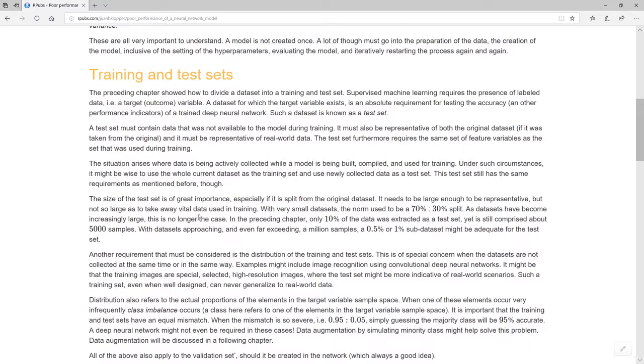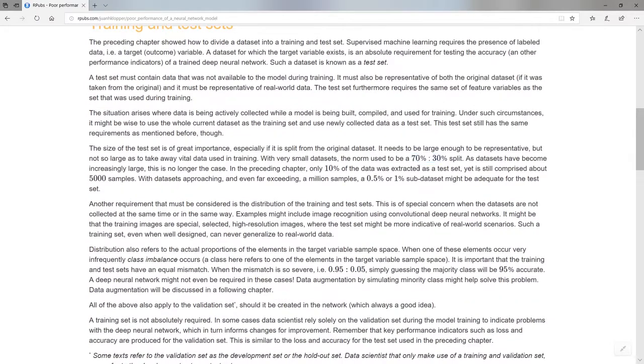Now you don't always need to split that from an existing data set. It might well be that you have a data set and you use that data set and while the network is being developed the data collection continues and it's this new data that is going to be the test set. One thing though is to consider just the size of the data set. If the data set is very small the norm used to be this 70-30% split because we needed enough data in this test set to make the testing accurate. But in modern days where we have perhaps millions of samples we can really have this 5% or 1% split in making that test set that will still contain enough samples to be representative of the whole data set.